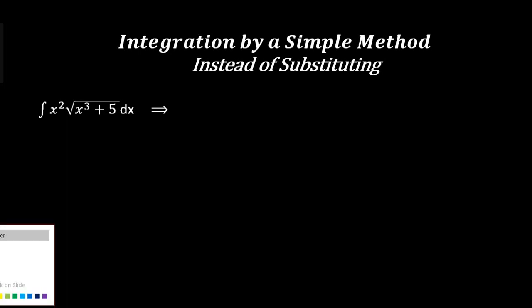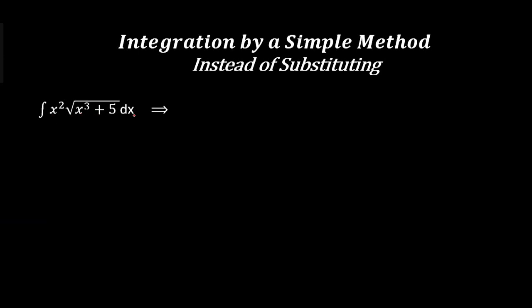Let's look at this example: the integral of x² times the square root of (x³ + 5) dx. How do you integrate this? Using a fast approach, instead of letting u equal x³ + 5 and doing all of that change of variable, we use a special integration technique.